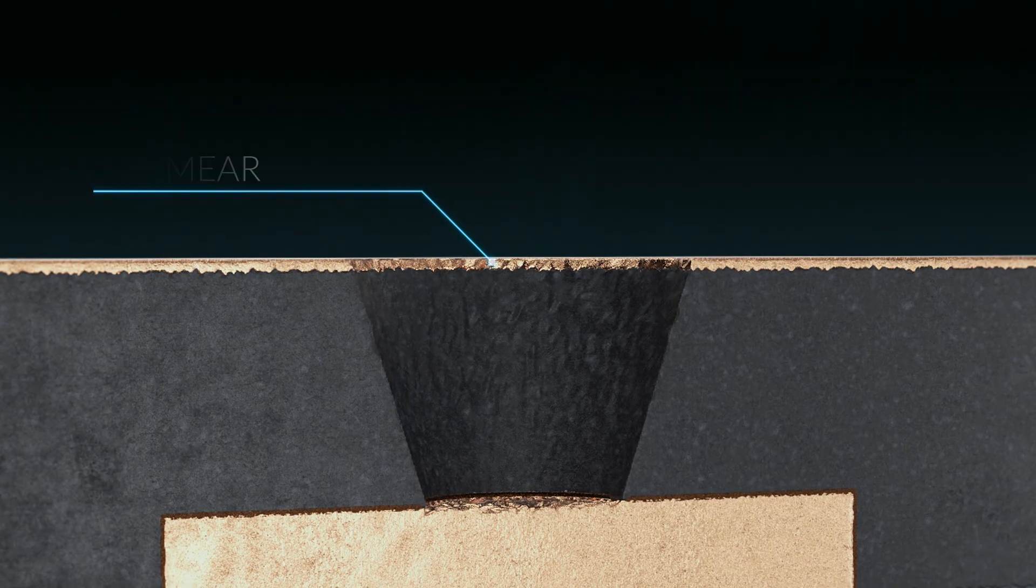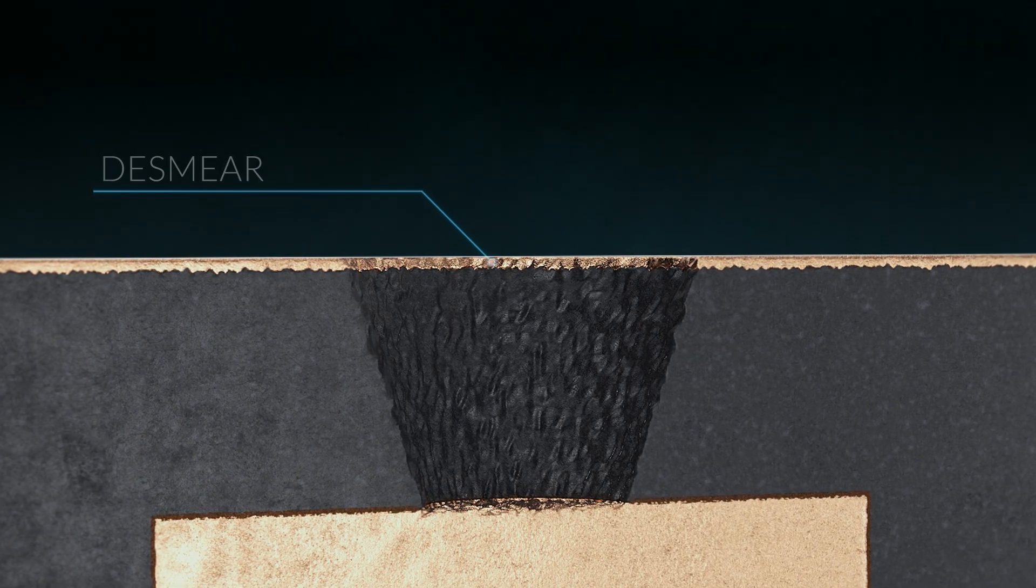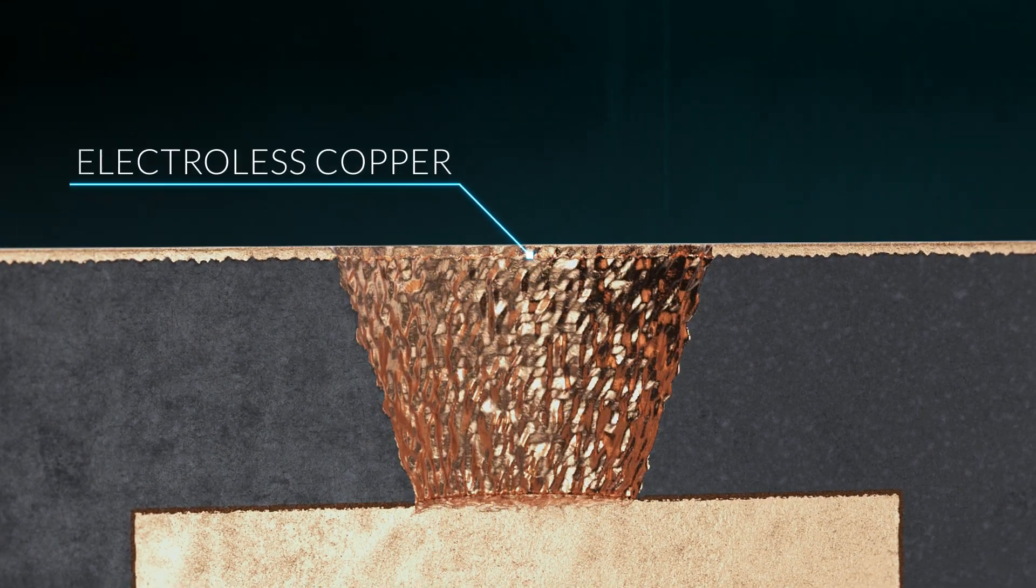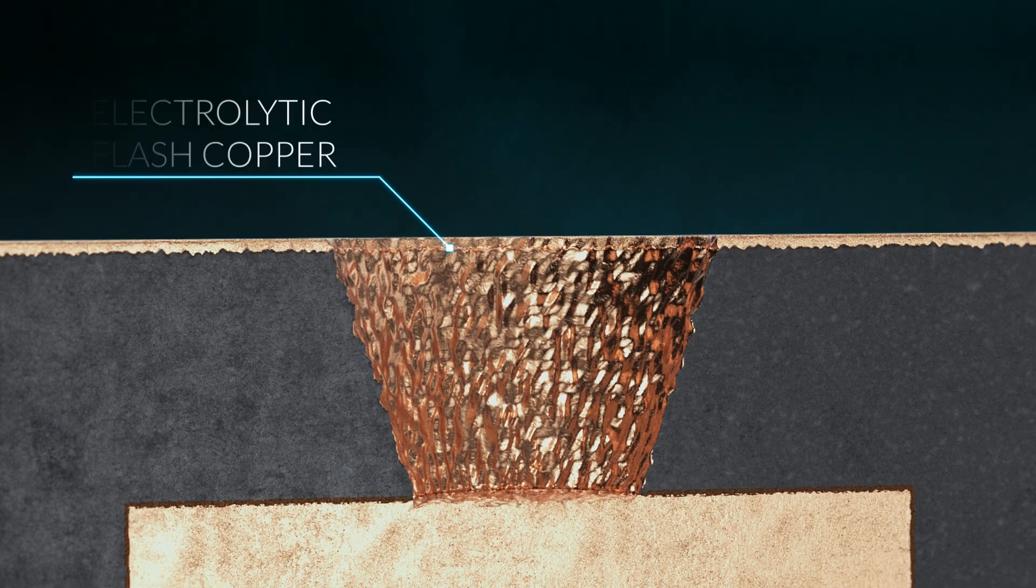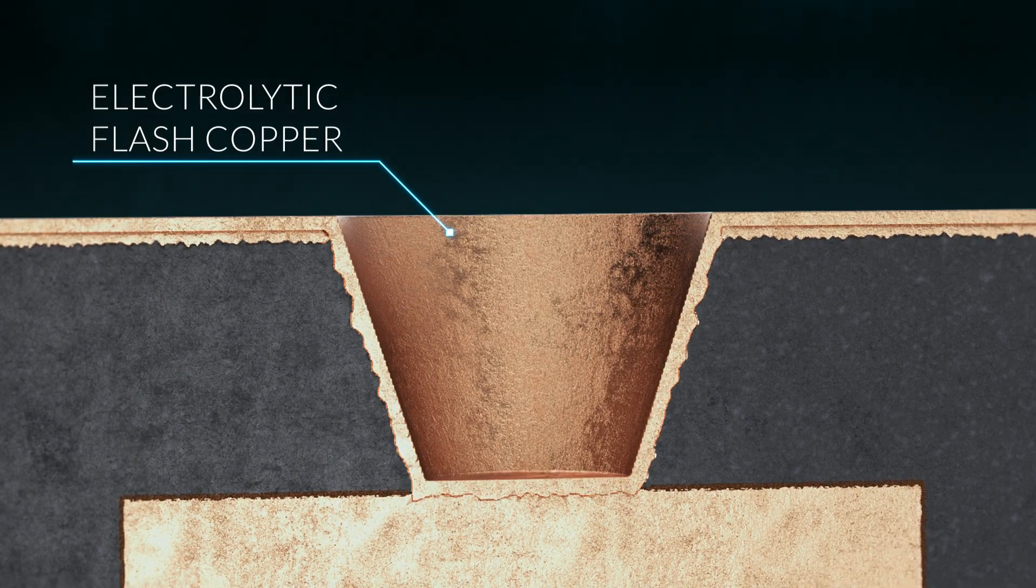The de-smear process to remove smear from the inside of the microvia. The palladium activation prior to metallization. Electroless copper metallization. Electrolytic flash copper plating to reinforce the previous metallization layer.